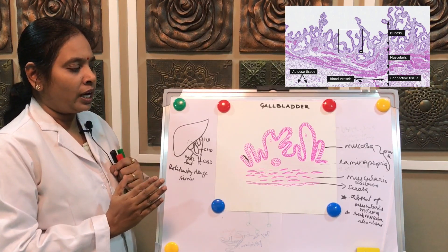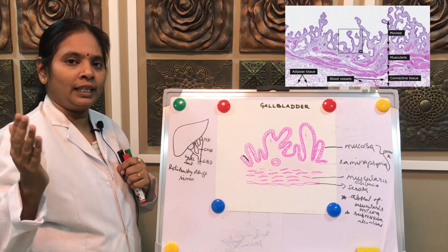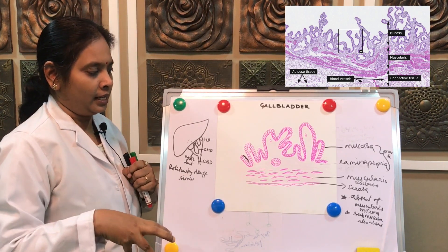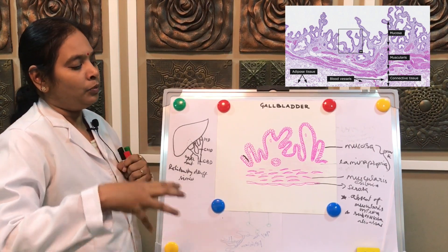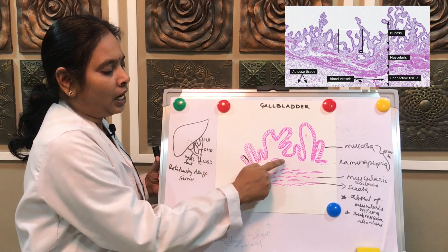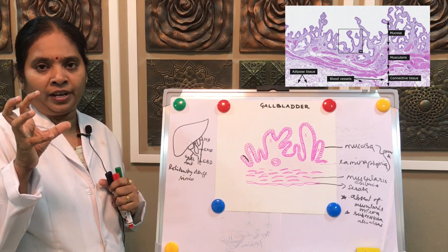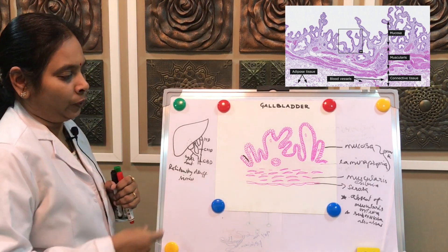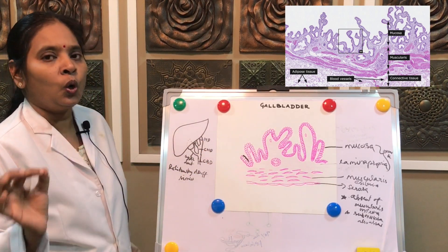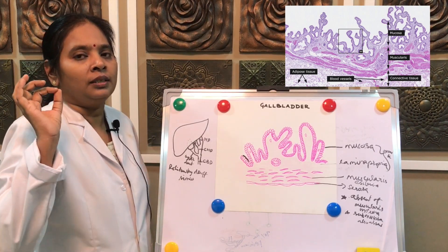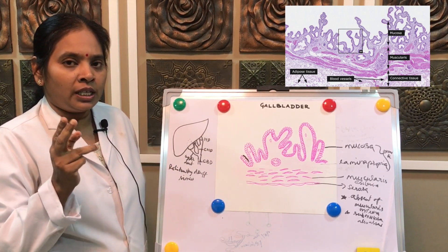The mucosa is lined by simple tall columnar epithelium which shows microvilli, giving a striated border appearance. The mucosa is thrown into irregular large folds giving a honeycomb appearance. In the lamina propria of the gallbladder, unlike the GI tract, there are no lymphatic vessels — only blood vessels are seen. That is an important characteristic of the gallbladder's lamina propria.